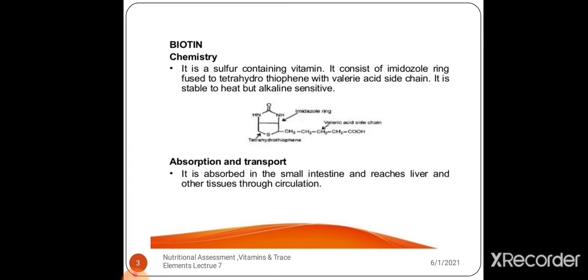Let's start with biotin. Biotin chemistry: it is a sulfur-containing vitamin. It consists of an imidazole ring fused to a tetrahydrothiophene with a valeric acid side chain. It is stable to heat but alkaline sensitive.